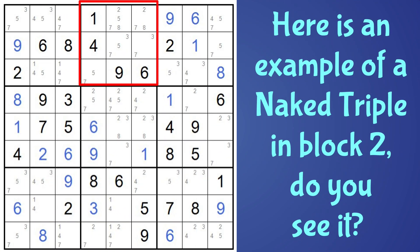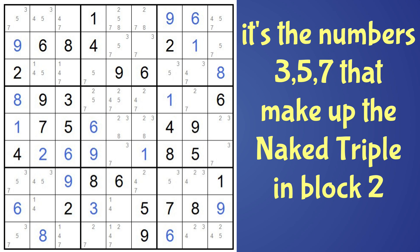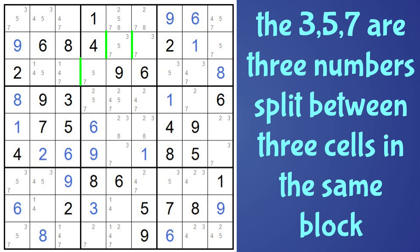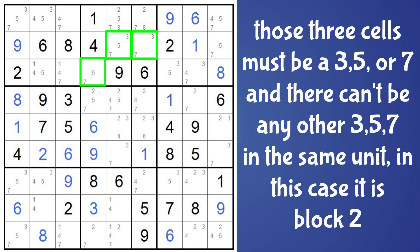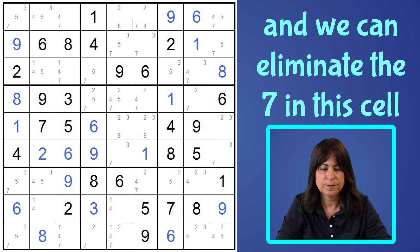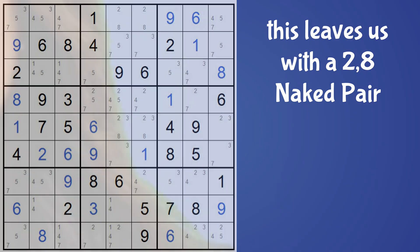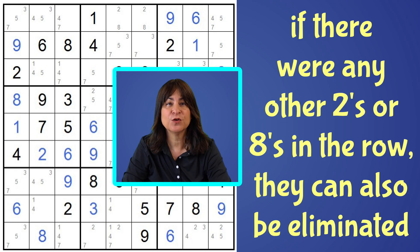Let's take a look at this example of a naked triple in block two. You're looking for three numbers split between three cells. The numbers three, five, and seven make up the naked triple in block two. We have three numbers — three, five, and seven — split between these three cells, which means these three cells must either be a three, a five, or a seven. There can't be any other threes, fives, or sevens in the same block. So we can eliminate the five-seven here and the seven here, leaving us with a two-eight naked pair. If there were any other twos or eights in the row, they also could be eliminated.